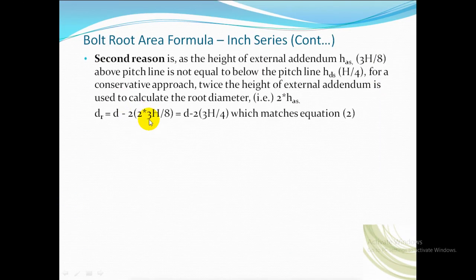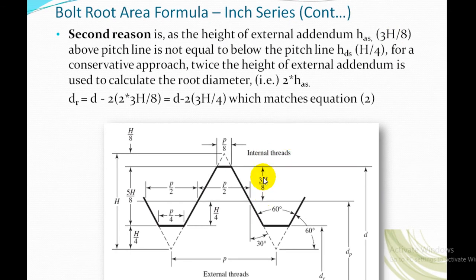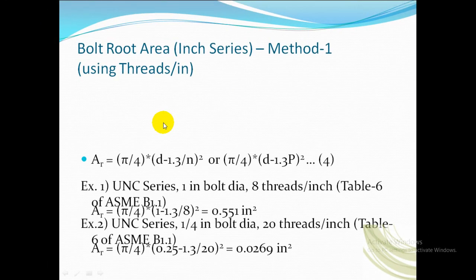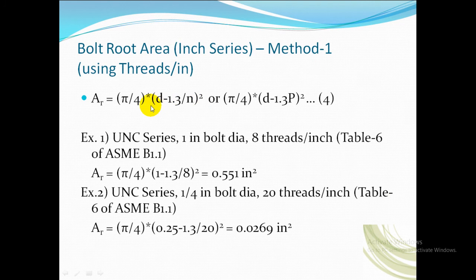One more reason: after searching for it, I found as the height of the external addendum above pitch line is not equal to below pitch line, for conservative approach, twice the height of external addendum is used to calculate the root diameter, which is nothing but 2 times HIS. Then dr equals d minus 2 times 3H by 4, which matches equation 2. Finally, the bolt root area Ar equals pi by 4 times (d minus 1.3 divided by n) whole square, or (d minus 1.3 times P) whole square, since number of threads per inch and pitch are reciprocal.